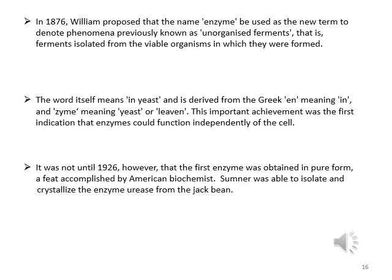In 1876, Wilhelm proposed that the name 'enzyme' be used as a new term to denote phenomena previously known as unorganized ferments — ferments isolated from the visible organism in which they were formed. The word is derived from Greek: 'en' meaning 'in' and 'zyme' meaning 'yeast or leaven.' This was the first indication that enzymes could function independently of the cell. It was not until 1926 that the first enzyme was obtained in pure form, when the American biochemist Sumner isolated and crystallized the enzyme urease from jack bean.